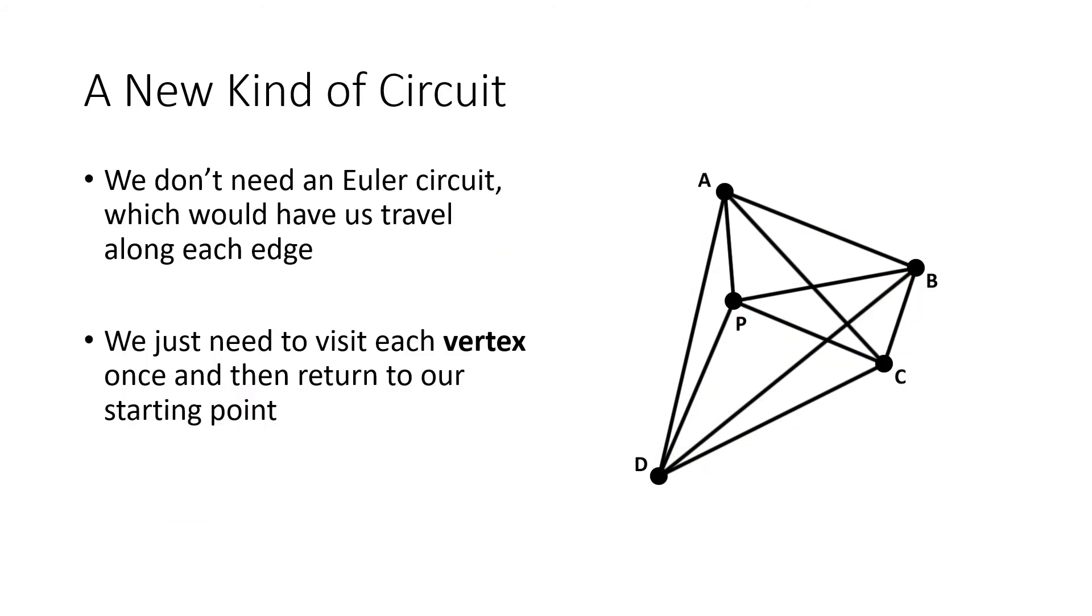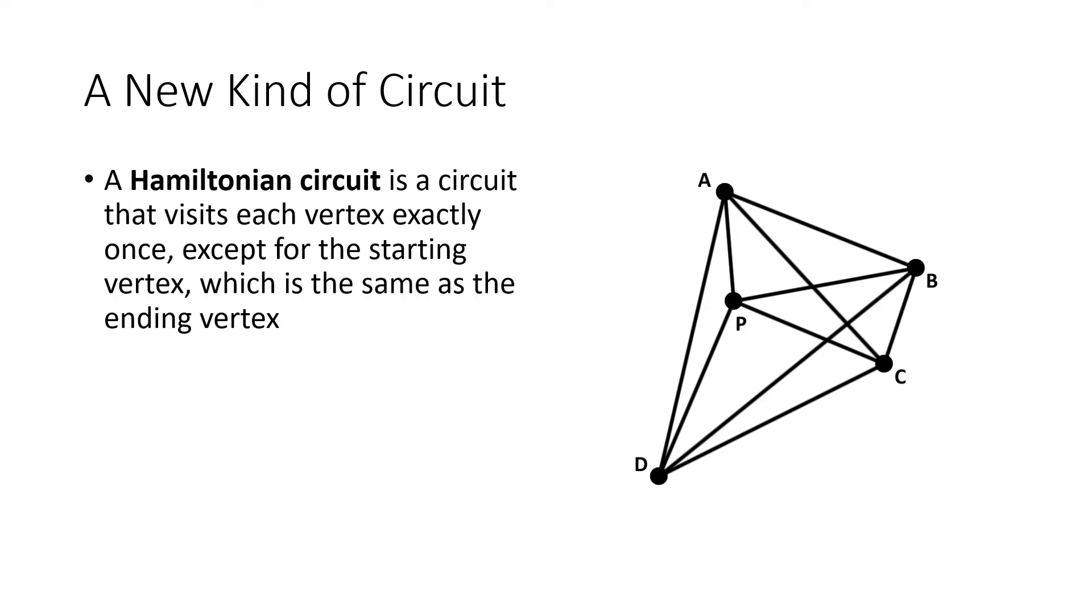So what is it that we need to do? We've got to visit each vertex once and then return to our starting point. And that's not an Euler circuit, that's something else. That's what's called a Hamiltonian circuit.